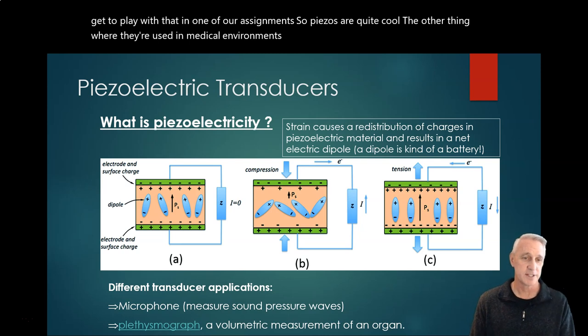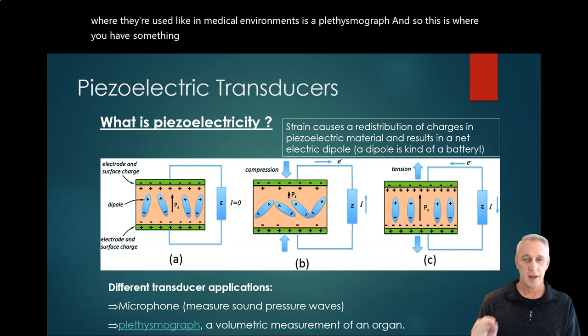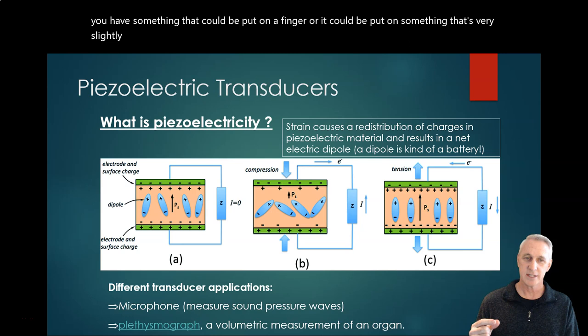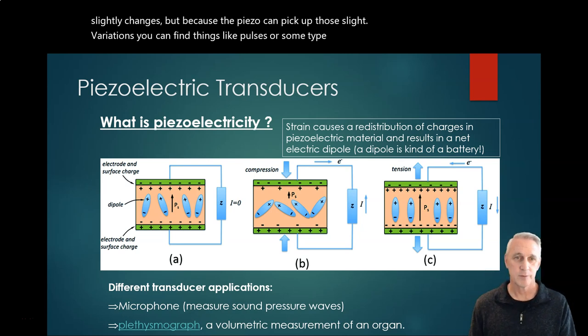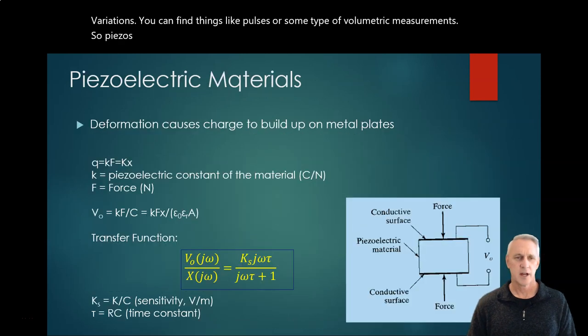Piezos are quite cool. The other thing where they're used, like in medical environments, is a plethysmograph. So this is where you have something that could be put on a finger or it can be put on something that very slightly changes. But because the piezo can pick up those slight variations, you can find things like pulses or some type of volumetric measurements.